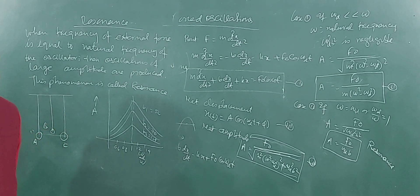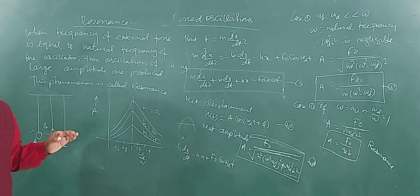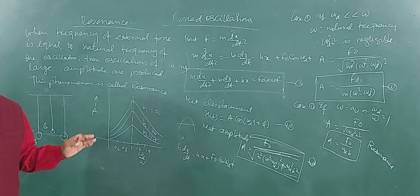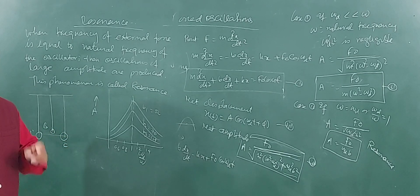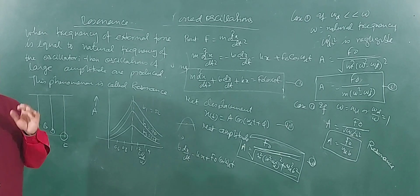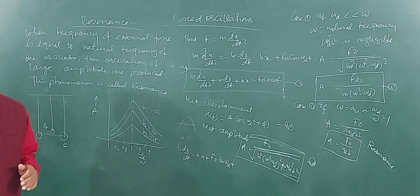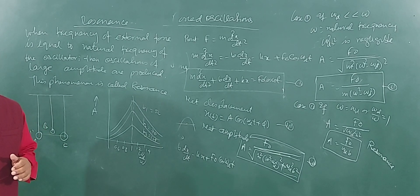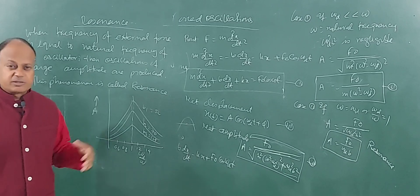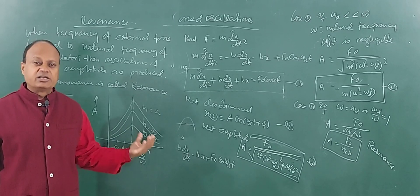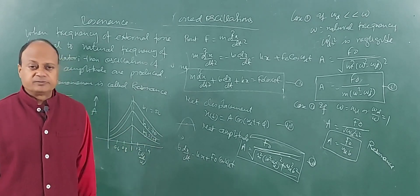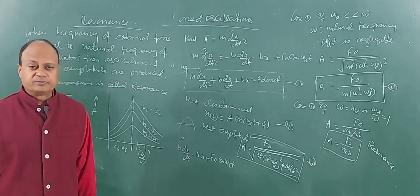There are so many examples of resonance in everyday life. For resonance, you have to remember that the frequency of the external source should be equal to the natural frequency of the oscillator. Thank you very much. Watch the video till the end so they can understand this concept. Thank you.